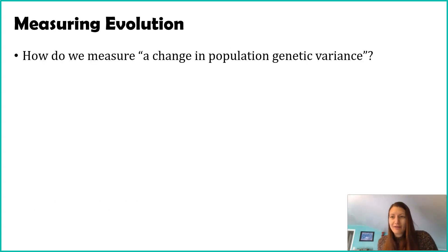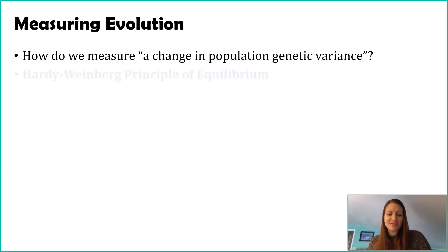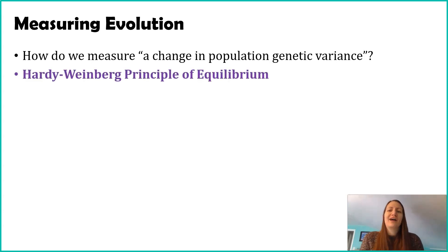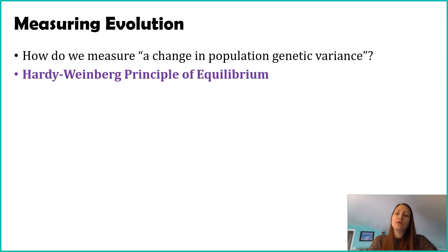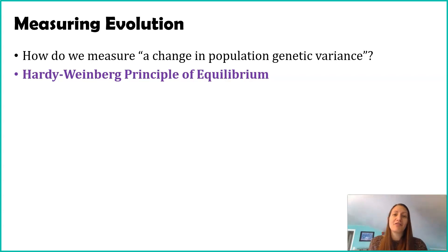So how do we measure enough change to say evolution is happening? That's where the Hardy-Weinberg principle of equilibrium comes in. Hardy and Weinberg were two scientists — actually more mathematicians than hardcore scientists — but their work is incredibly important in the field of evolution and genetics.